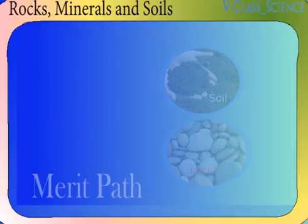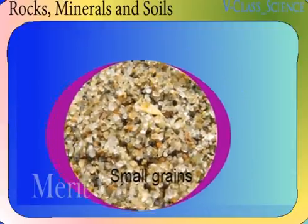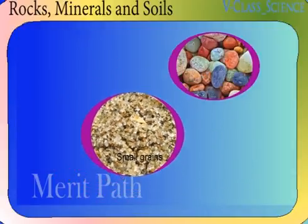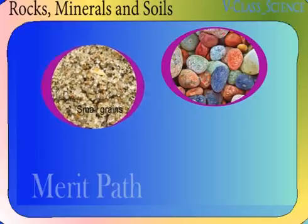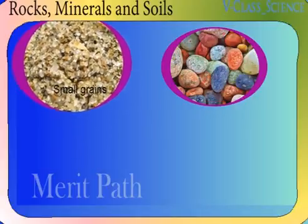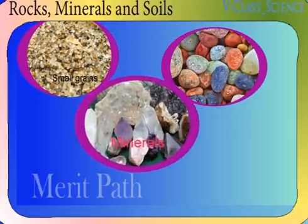A single rock is made up of small grains of different colors. These grains are naturally occurring substances which are known as minerals.